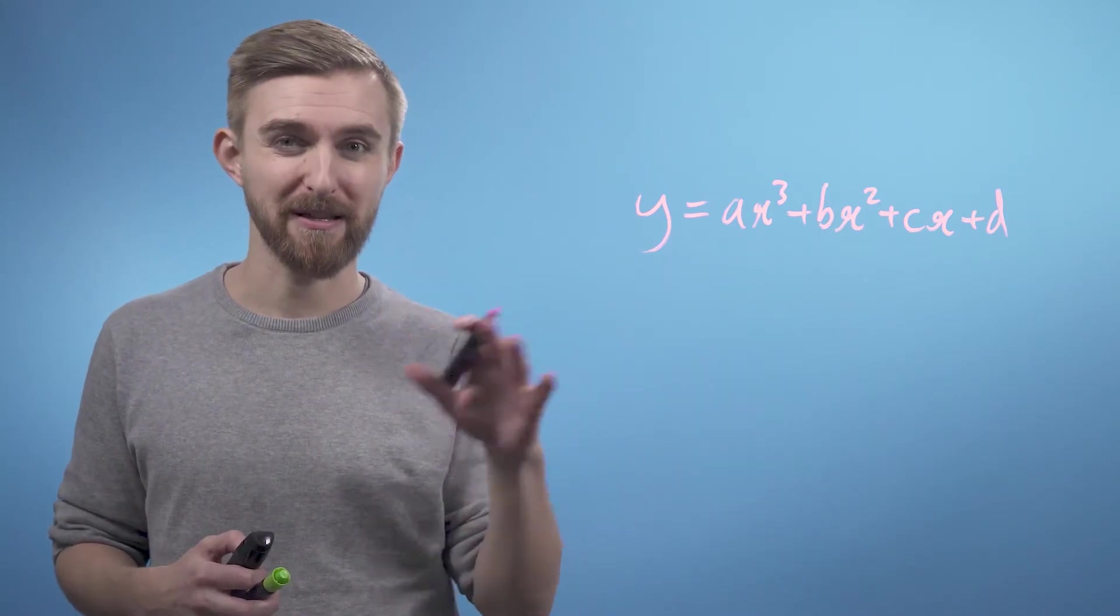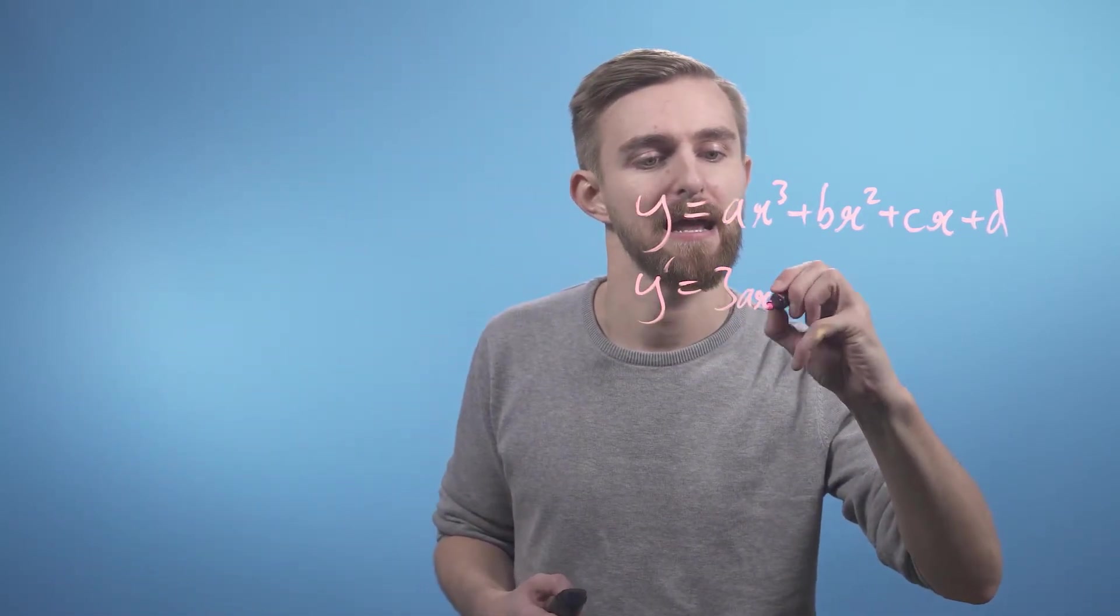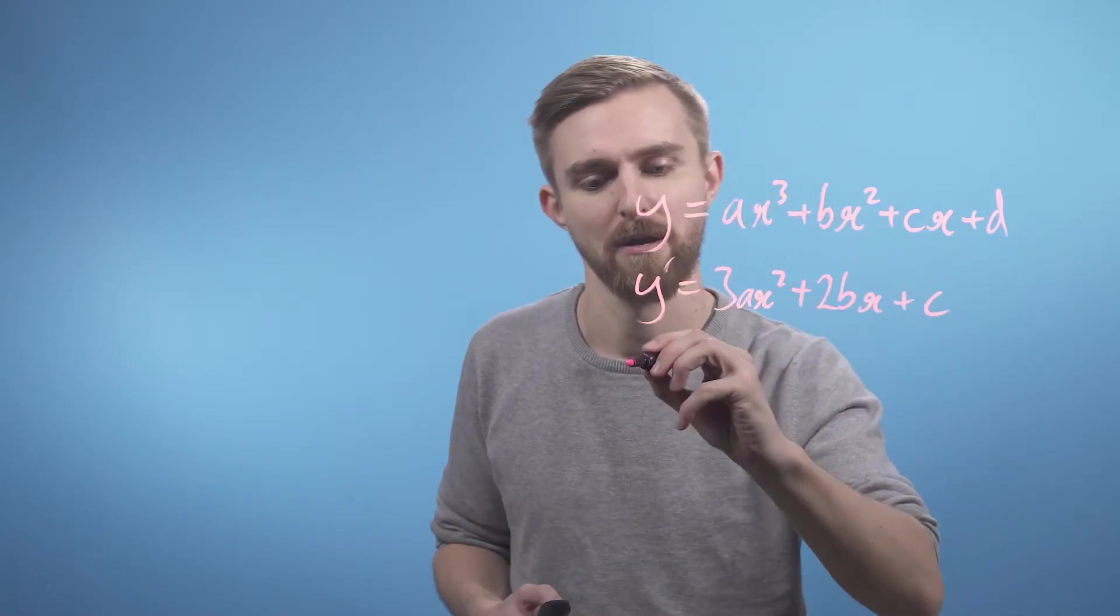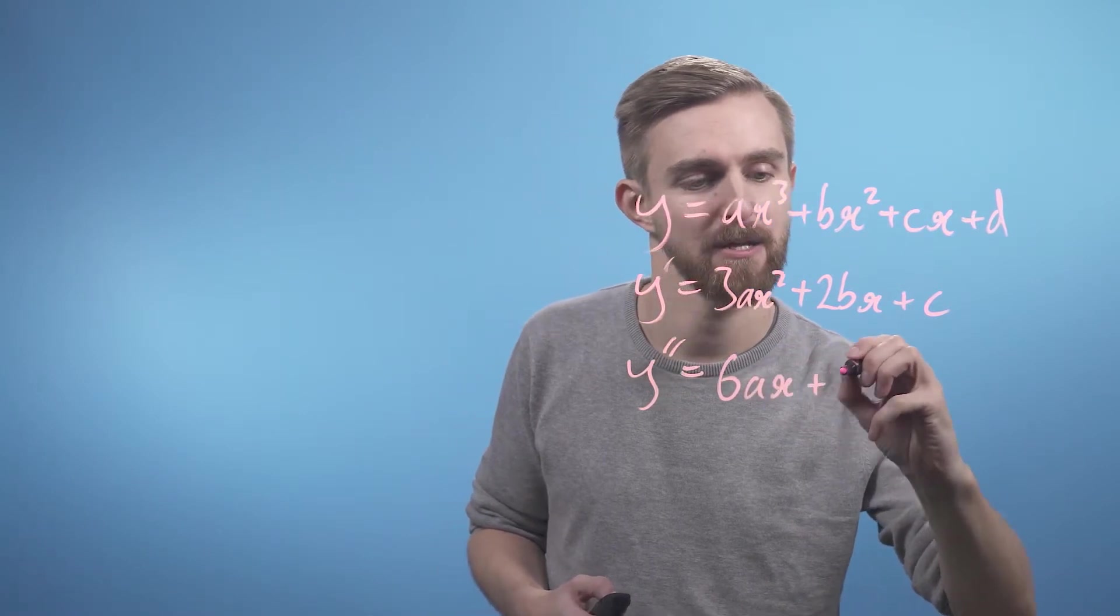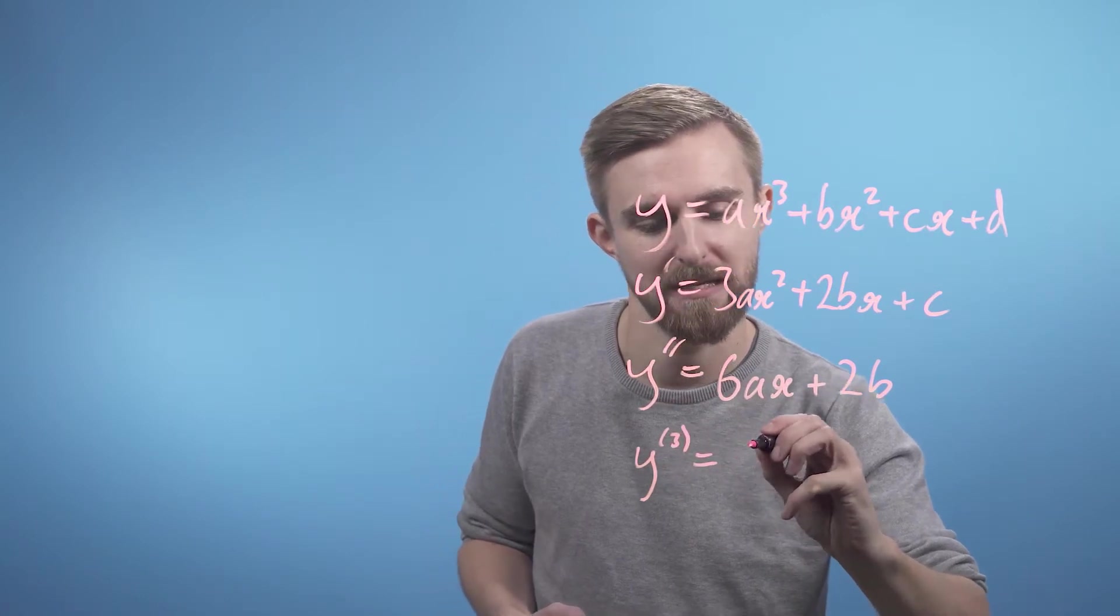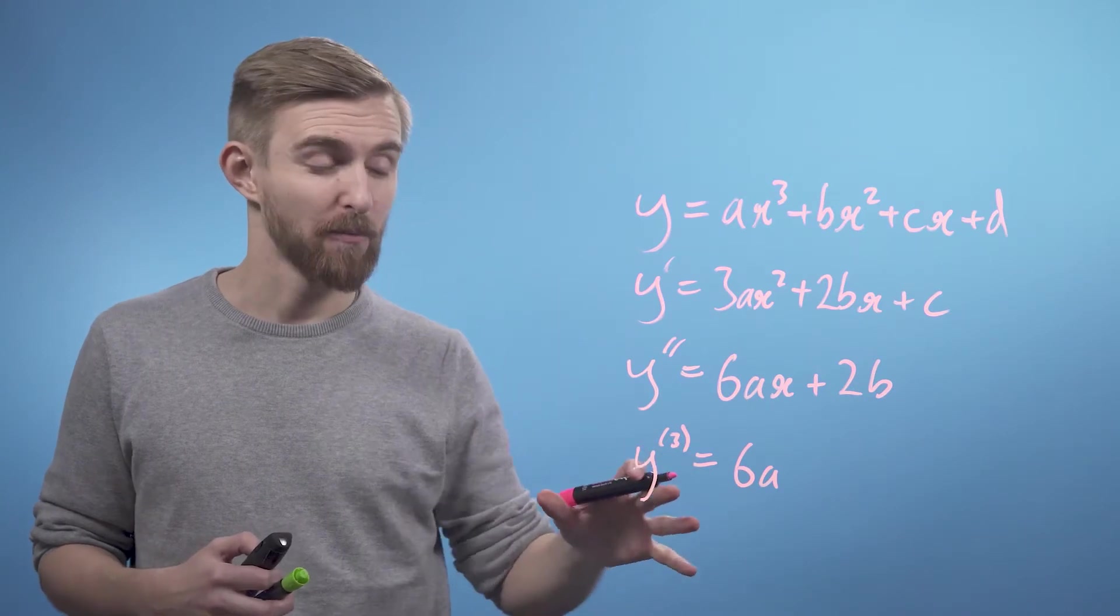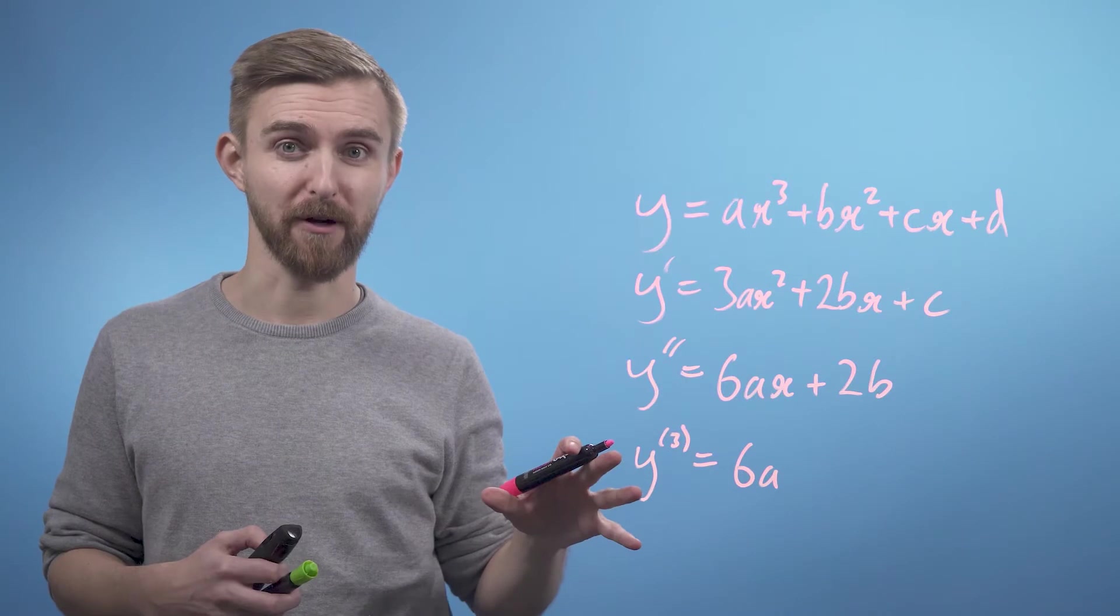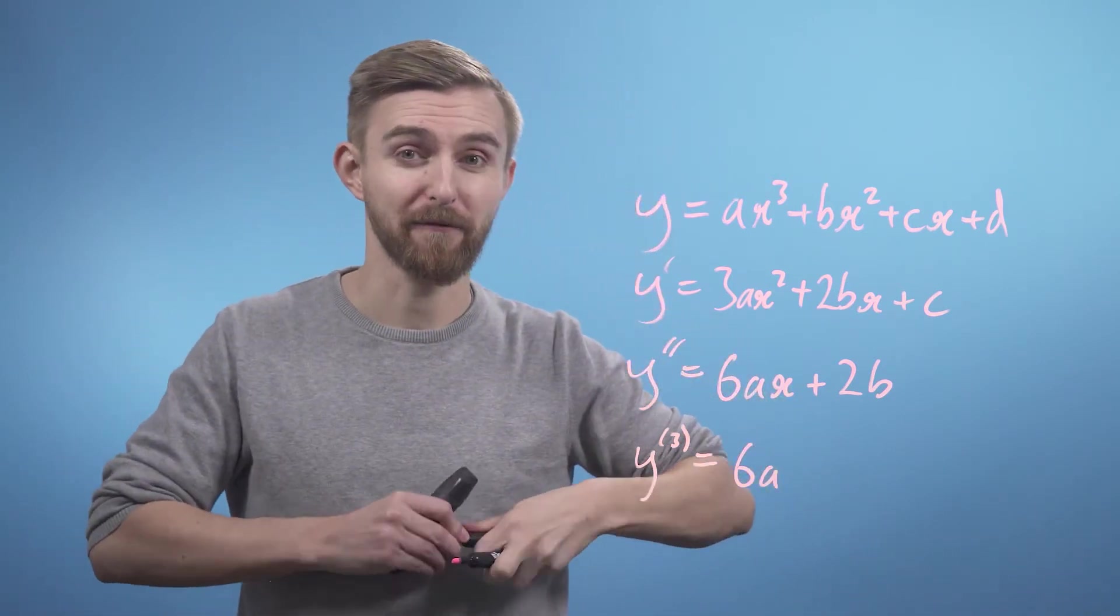So let's now differentiate this thing three times. y prime equals 3ax squared plus 2bx plus c. y double prime equals 6ax plus 2b. And y triple prime is just going to be 6a.